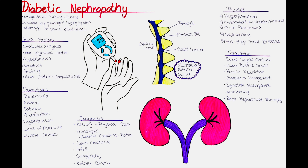Smoking can worsen kidney damage in patients with diabetes and increase the risk of developing diabetic nephropathy. Also, individuals with other diabetes-related complications, such as diabetic retinopathy, may have an increased risk of diabetic nephropathy.